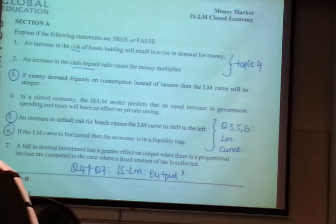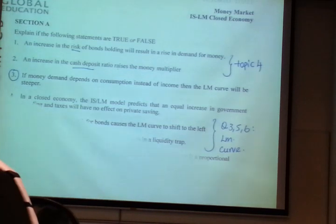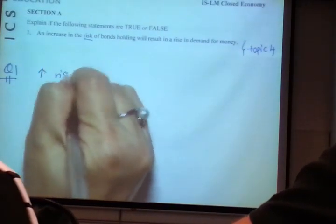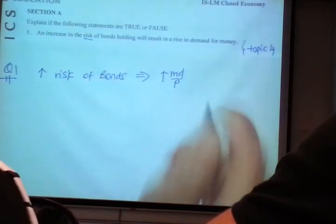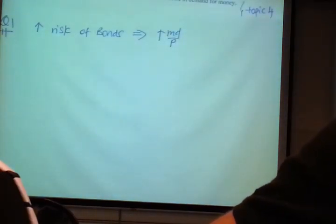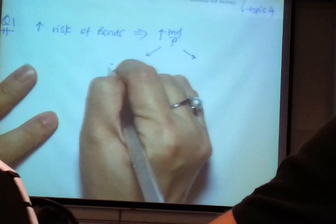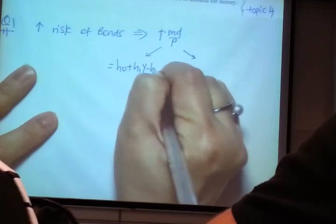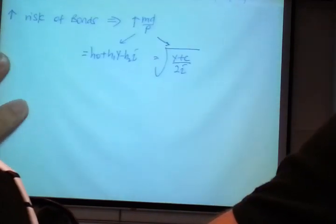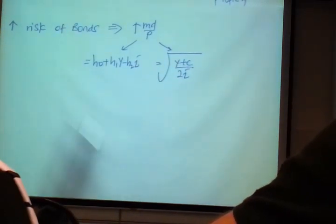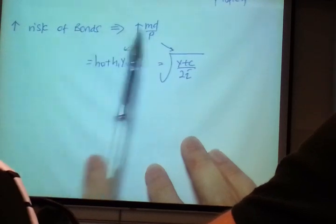Question 1: The increase in the risk of bonds holding will increase demand for money. Read the question — increase in risk of bonds, and the effect is money demand goes up. As usual, identify the topic, which is money demand. Money demand has 2 models: one is Keynes — H0 + H1Y − H2I — and the other is Baumol-Tobin — Y times TC over 2I.